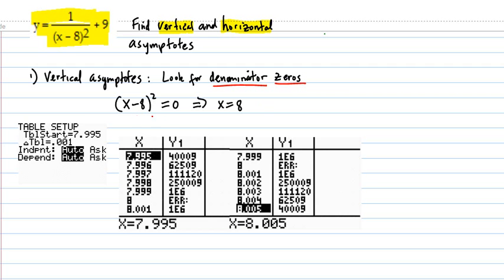So you set the denominator equal to zero, solve it out, and you're just going to get x equals 8. So something is happening at x equals 8.